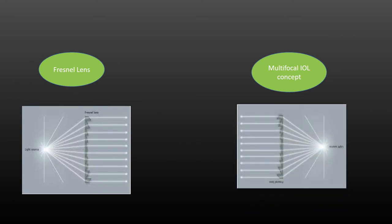The concept of today's multifocal IOL has its genesis in Fresnel lenses. The Fresnel lens collected light from the lamp and the sawtooth pattern made it parallel. In the multifocal IOL it is just the opposite, but the concept remains the same — here we collect parallel light and bring it to focus. The function differs: in Fresnel lighthouse lenses they collect light and make it parallel; here we collect parallel light and make it converge into a focal point.